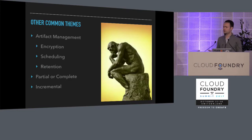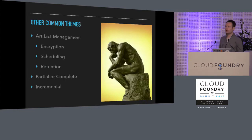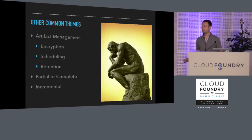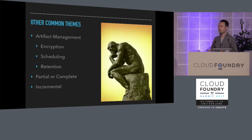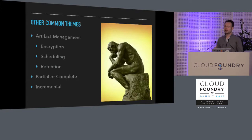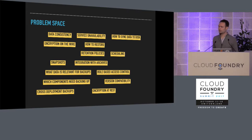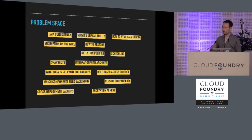There are other themes people think about when looking at backups: how do you manage artifacts — how do you encrypt them at rest, schedule backups, and deal with retention? Presumably you want to expire old backups at some point, because if your blob store is a terabyte you don't want to keep that forever. Do you take partial or complete backups? Do you want to incrementally back up everything that's changed since the last backup, or do you have to back up the whole thing? So we end up with quite a large problem space covering data consistency, how restore works, encryption at rest, and forwards and backwards compatibility.